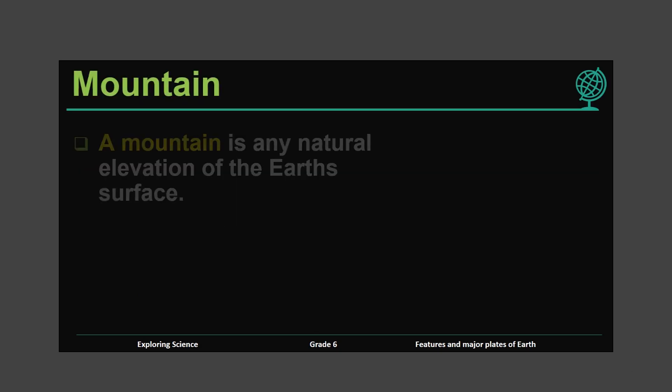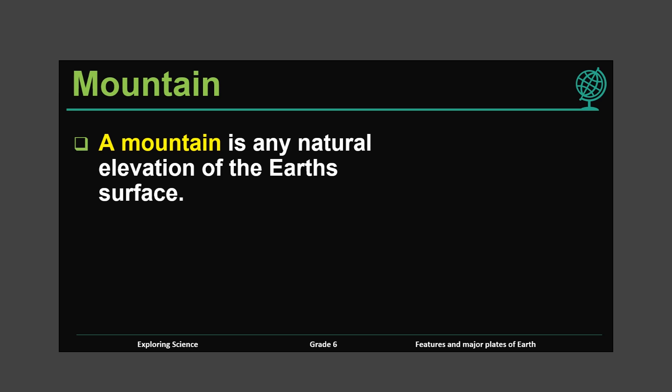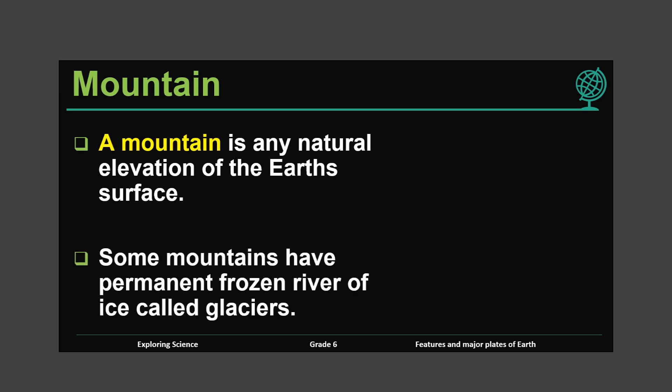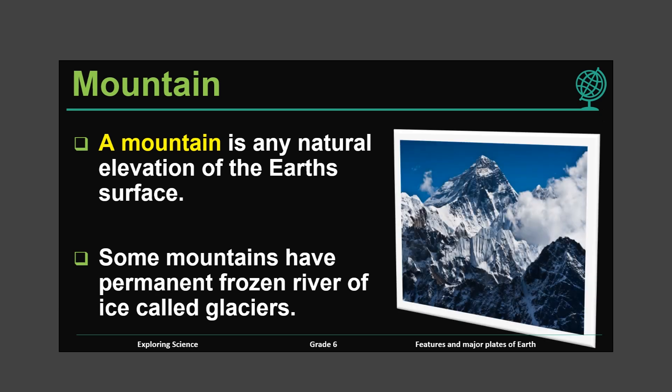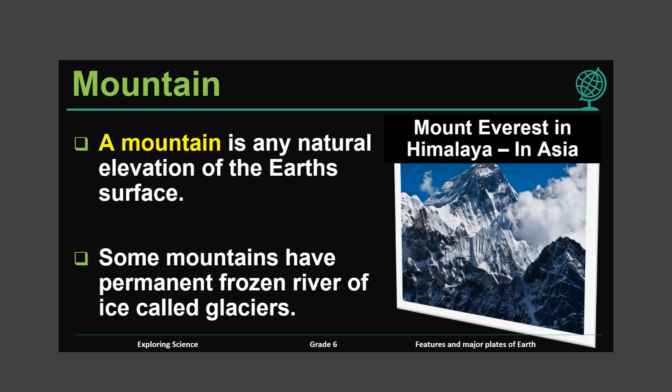Mountain. A mountain is any natural elevation of the Earth's surface. Some mountains have a permanent frozen river of ice called a glacier. Some mountains reach high up into the clouds. Do you know this mountain? It is called Mount Everest in the Himalayas in Asia. This is the highest mountain in the world because it has the highest elevation above sea level.